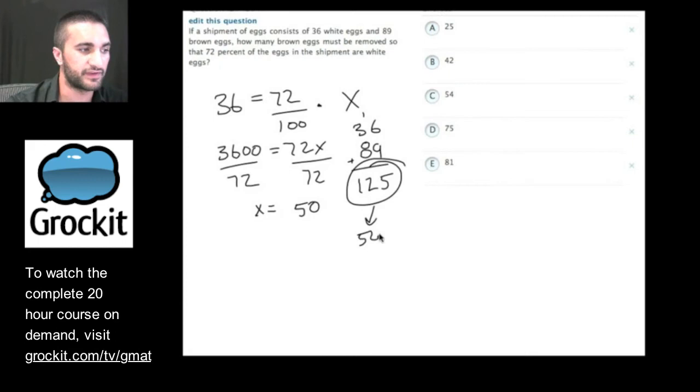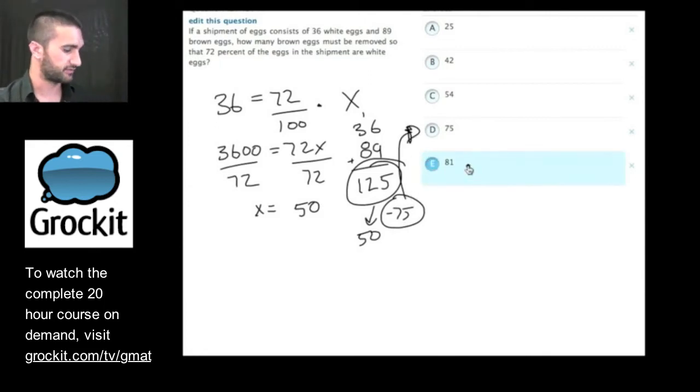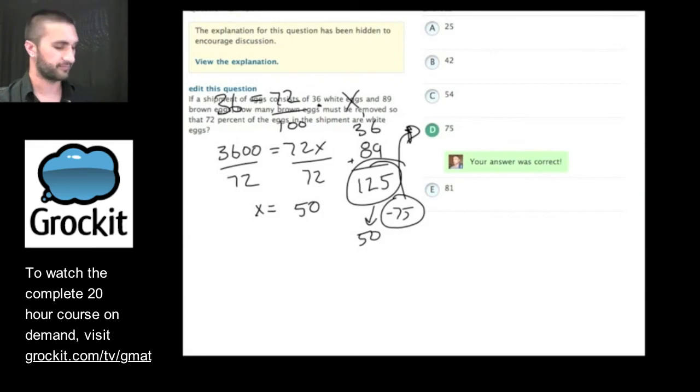We started at 125. We want to get to 50. So it looks like we lost 75 eggs, and since we're only removing brown eggs, this is the number of brown eggs we have to get rid of. Nice. Great job there.